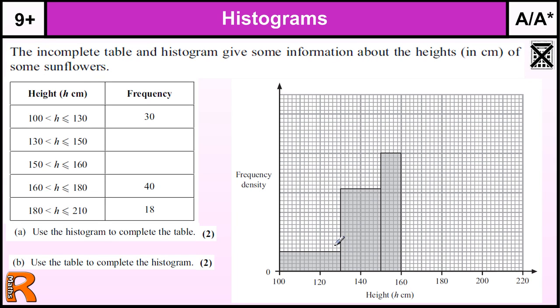So you start by using the part of the table that's filled in, along with the part of the graph that's drawn, to work out what your frequency density is going to be on the side.